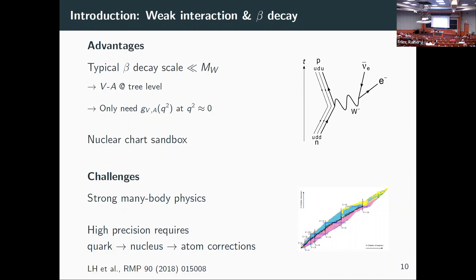What happens in beta decay is effectively a quark-level process — a down quark turns into an up quark — but it's actually a nucleon inside a nucleus inside an atom, and maybe inside a molecule as well. If you want to do this at the precision level, you have to take care of all of this, which clearly makes it more difficult.